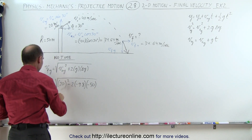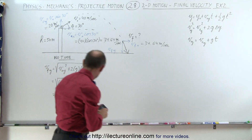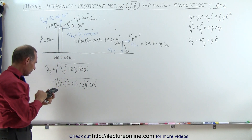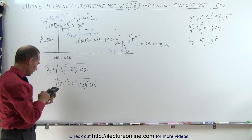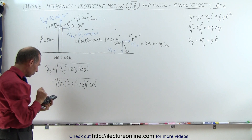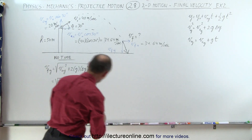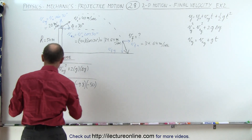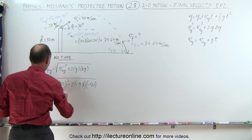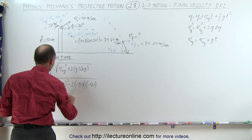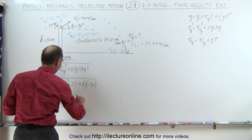Working this out: 400 plus 980 gives 1380, and taking the square root gives 37.15 meters per second. So the final velocity in the y direction is 37.15 meters per second.